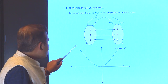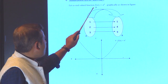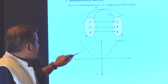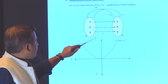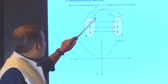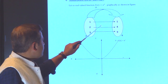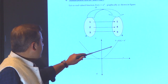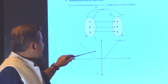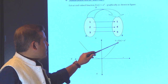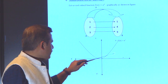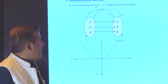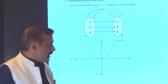Graphically, in the xy plane, y = x². When we plot these values in the xy plane, we see the curve f(x) = x². This is the representation of f(x) = x².